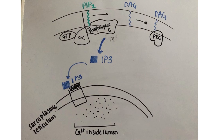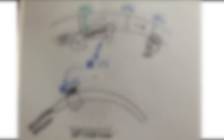IP3 travels to the surface of the sarcoplasmic reticulum, where it opens the IP3-gated calcium channel to allow calcium to flow from the lumen down the concentration gradient and into the cytosol.